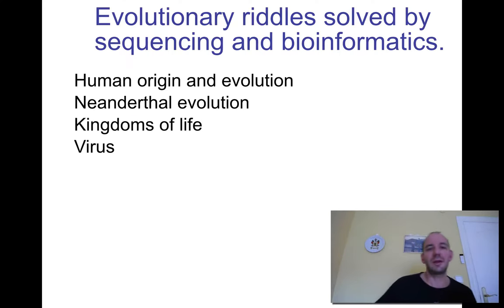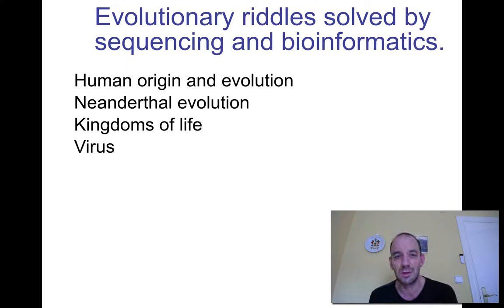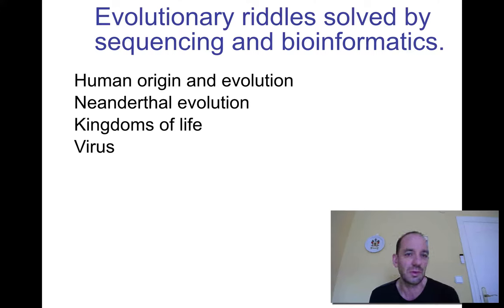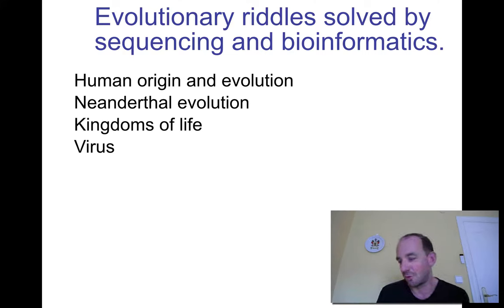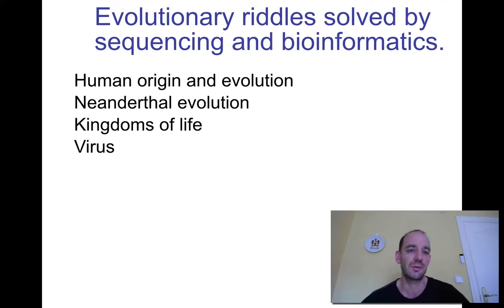A number of evolutionary riddles have been at least partly solved by large-scale sequencing and mathematics: Where do we come from? What is the human origin and our evolution? How did we migrate through the world? How are we related to earlier forms of humans, such as the Neanderthals? What were they like? What color hair did they have? We also know where the giant panda came from. And how viruses relate to other forms of life, and how we can predict which influenza virus will hit us this year — all of this is studied through sequences and evolution.